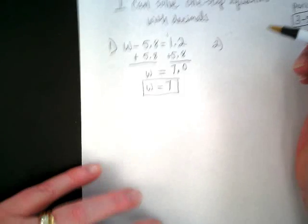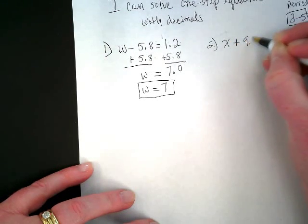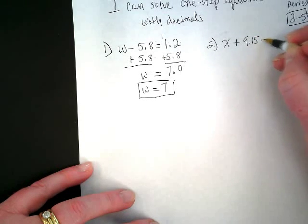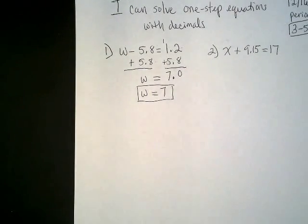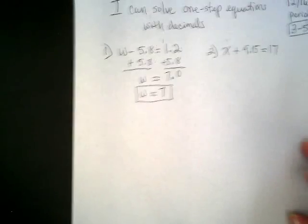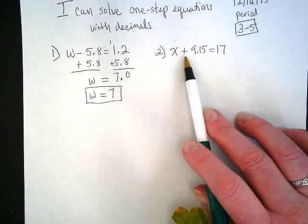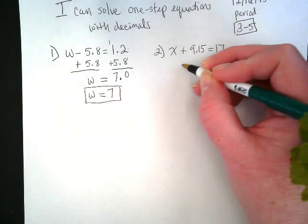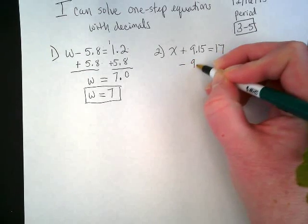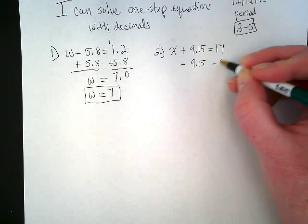We can even rewrite this as W equals 7. 7 plus 0 is the same thing as a whole 7. Okay, number 2 in our book is X plus 9.15 equals 17. What do we see here? Addition. So what are we going to use? I see addition, I use subtraction. I'm going to subtract that 9.15 from both sides.